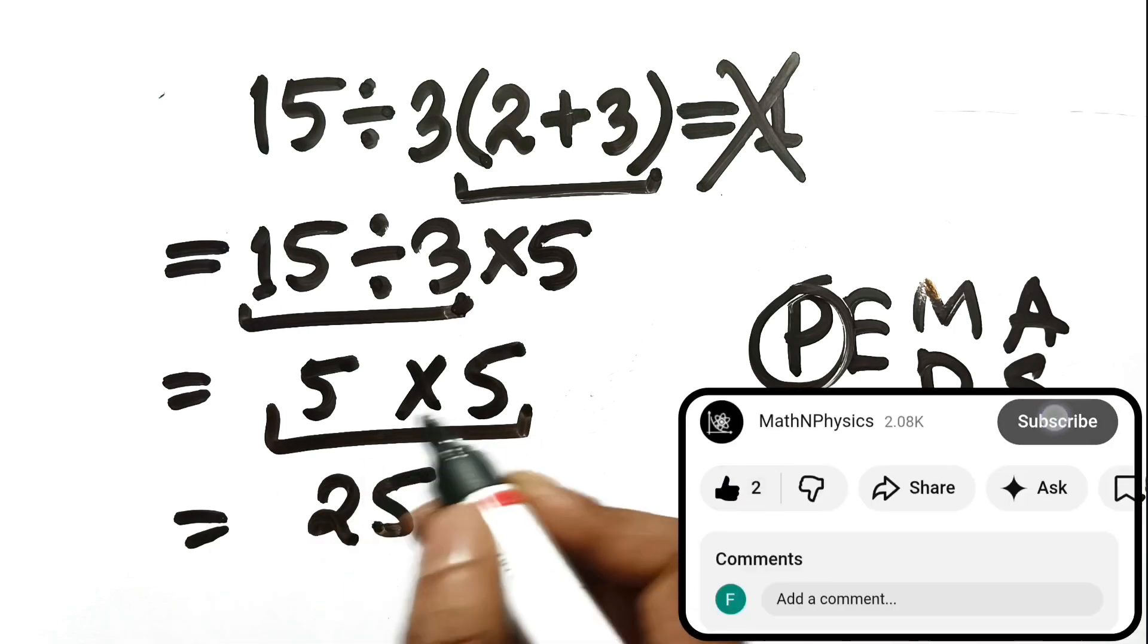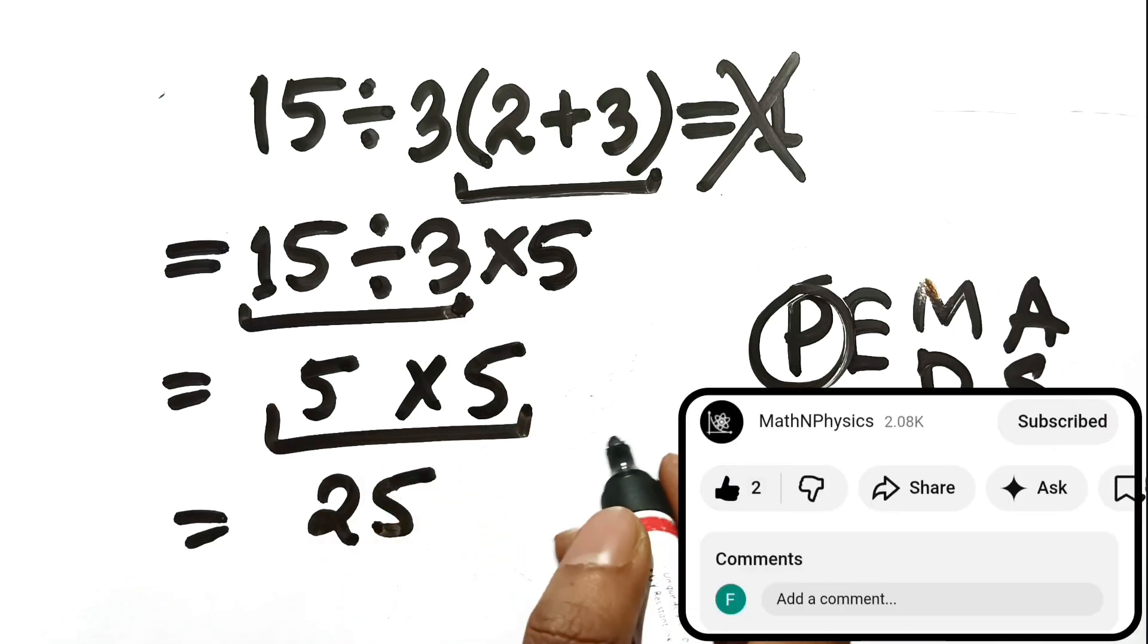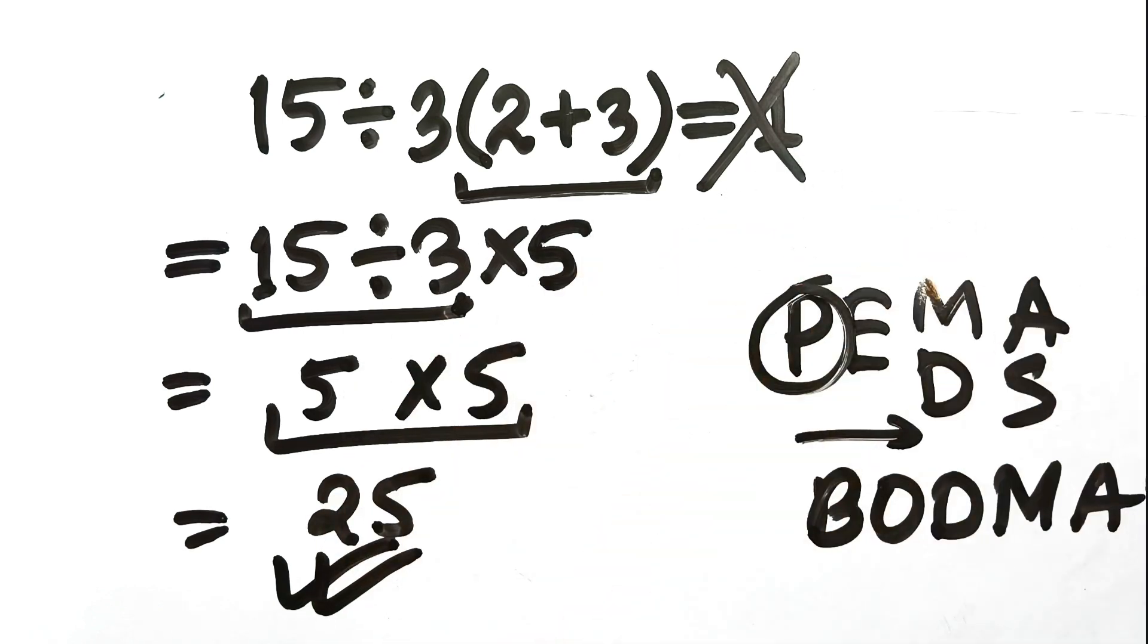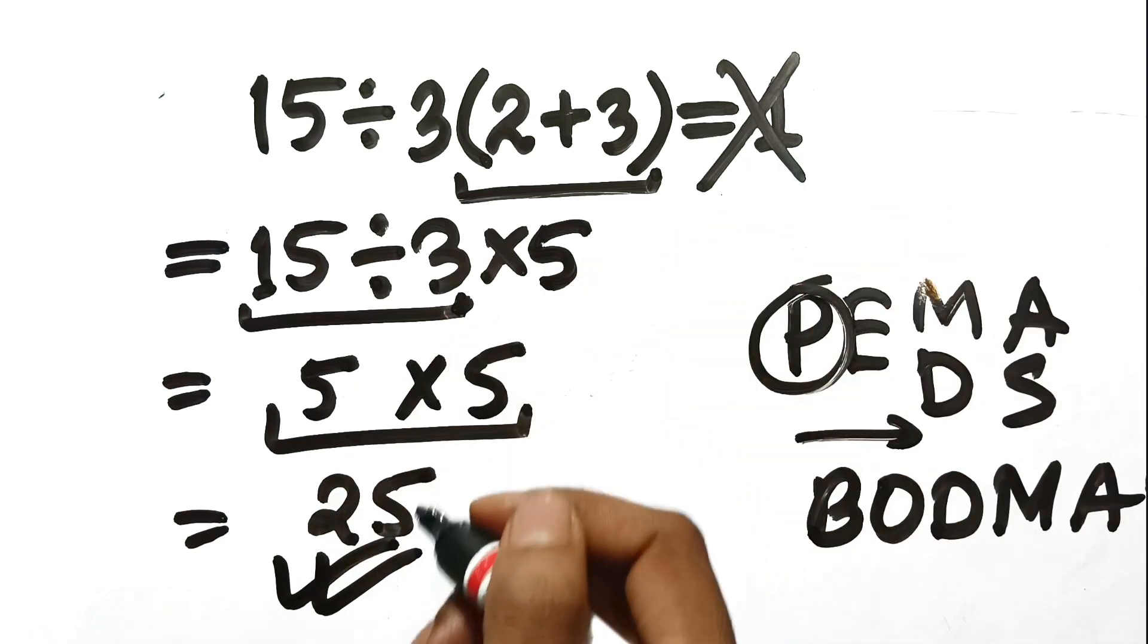The math does not lie when you follow the path correctly. So the correct answer is 25, not 1. If you can prove me wrong, go ahead. The comment section's all yours.